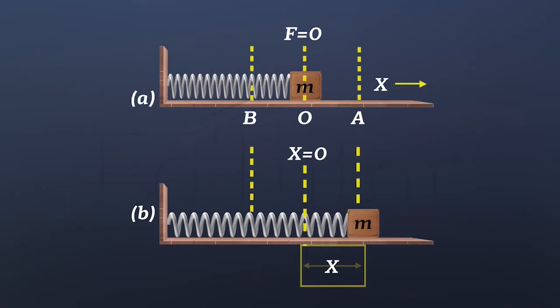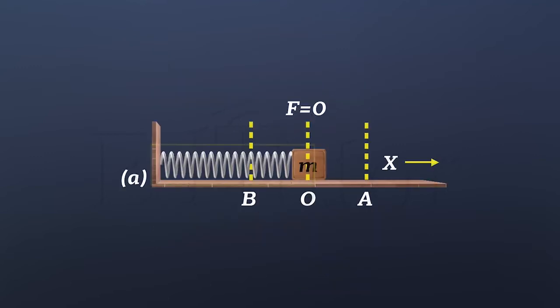Where x is the displacement of the mass from its mean position O, as shown in the figure, and k is the spring constant.